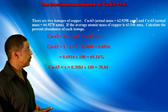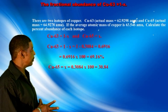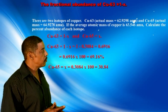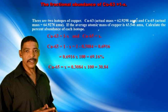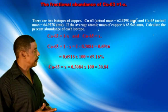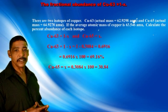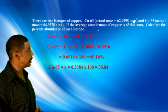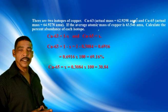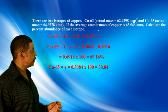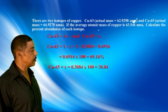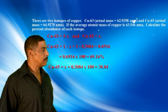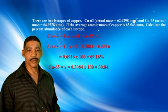So the fractional abundance of copper-63 is 0.6916. To calculate the percent abundance of copper-63, we simply multiply 0.6916 times 100, which equals 69.16%.